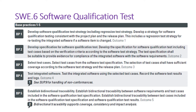Coming to the base practices: BP1 talks about developing a software qualification test strategy including regression strategy. The first step is strategy definition — both normal strategy definition and regression strategy definition. The inputs for these two are: software requirements (SRS), the project plan (PMP), and the release plan. So three inputs: software requirement specification, project plan, and release plan.